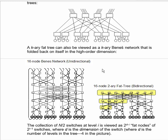So the collection of n over 2 switches at level i is viewed as 2 to the d minus i fat nodes of 2 to the i minus 1 switches, where d is the dimension of the switch.